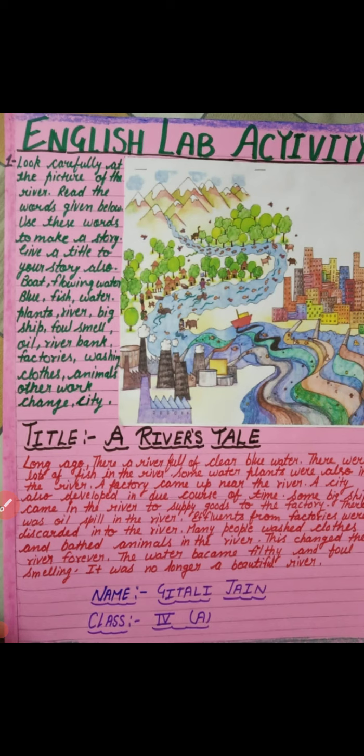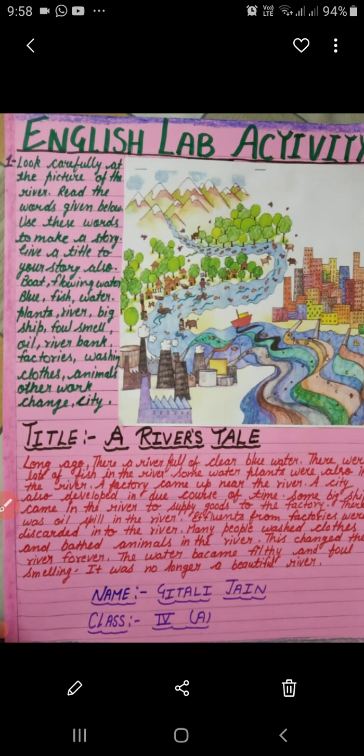I had sent you a picture and some words, and you had to write a few lines about the picture. I am just reading what the words given are: boat, flowing water, blue fish, water plants, river, big ship, foul smell, oil, riverbank, factories, washing clothes, animals, other work, chains, and city.